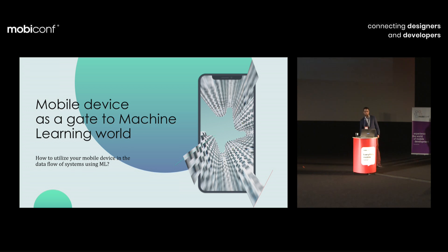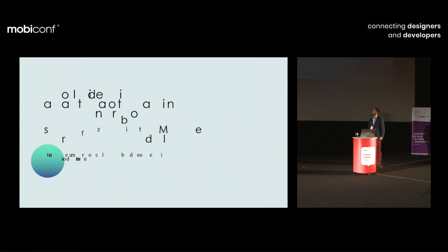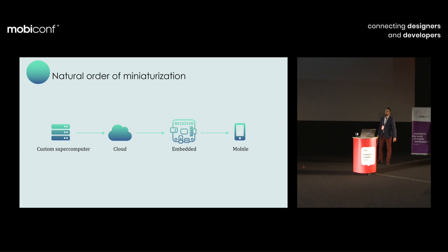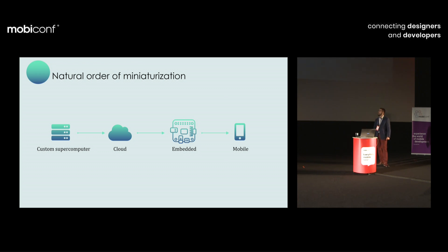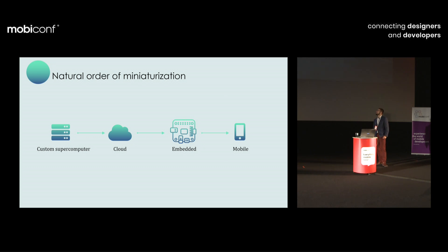Mobile device as a gate to machine learning world — how to utilize your mobile device in data flow of systems using machine learning. We have a natural order of miniaturization: when developing a new product, you need lots of computation in the AI area, so it's natural to use a custom supercomputer. After that we moved to cloud, like Azure and Amazon. Then we miniaturized our supercomputers as embedded, and now we are at the final stage — going mobile.